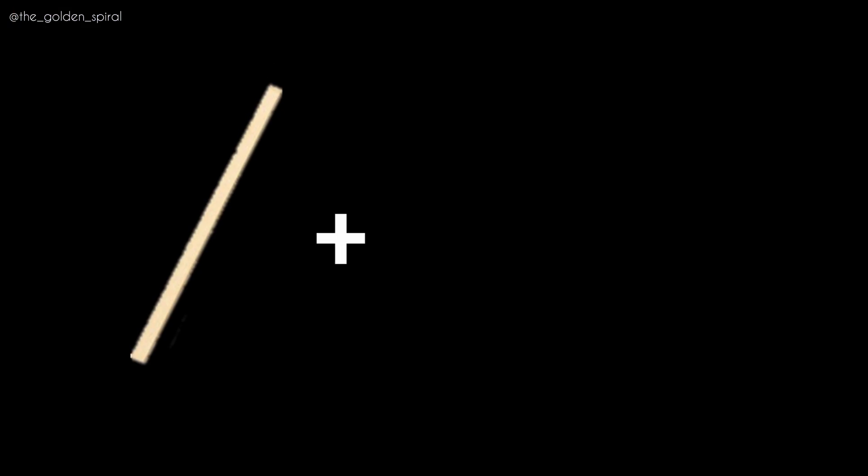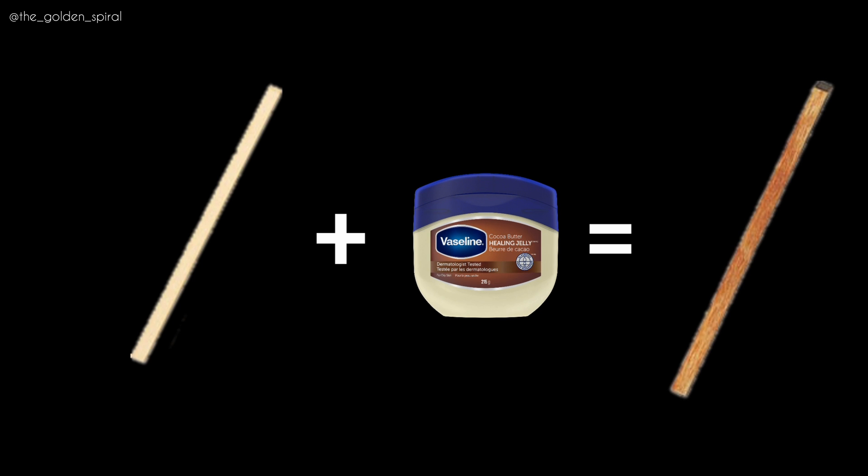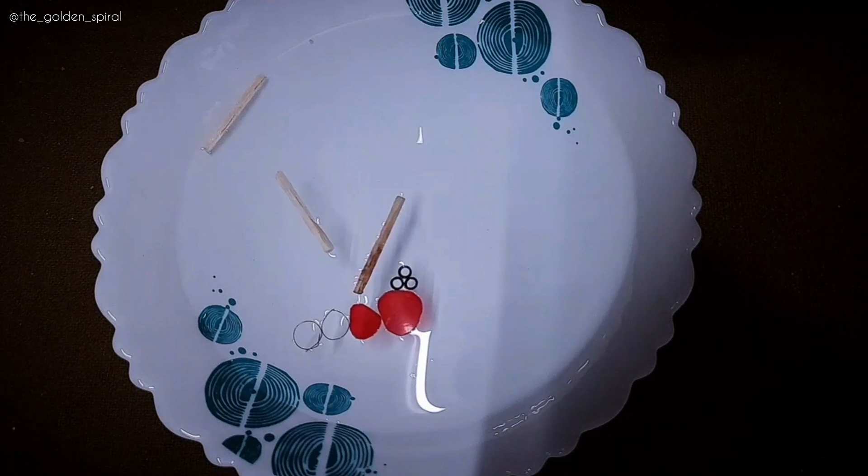I have coated this wooden piece with Vaseline. Vaseline is hydrophobic in nature. It makes a downward curving meniscus with water. And that's why it's behaving like a member of this group now.